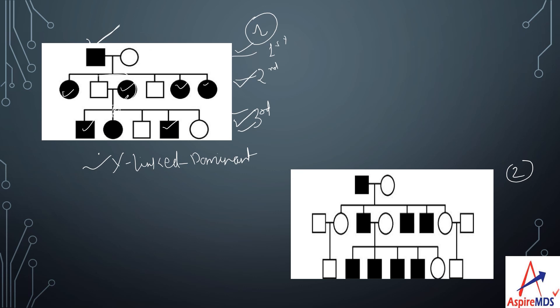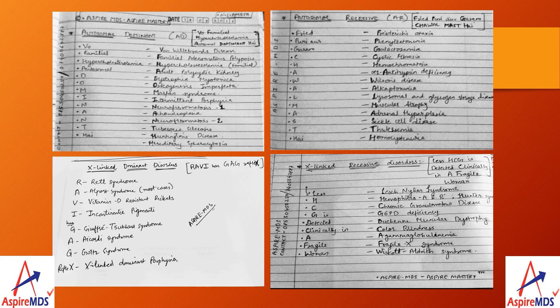In example two, only males are affected in each generation, so this is a Y-linked pedigree. Similarly, you can solve various examples easily within a fraction of seconds using these patterns.